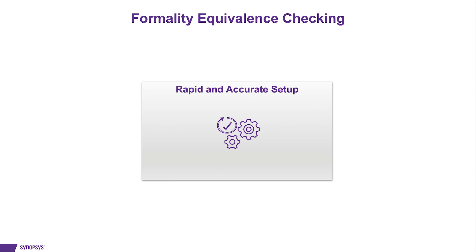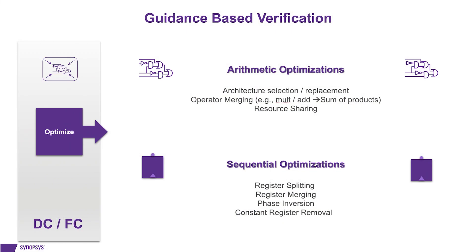Fast and accurate verification setup is extremely important. Optimization methods and the variability of these methods can significantly increase the verification complexity and runtime. Some common examples include complex arithmetic transformations, retiming, and sequential optimizations such as register splitting, register merging, phase inversion, and constant register removal.